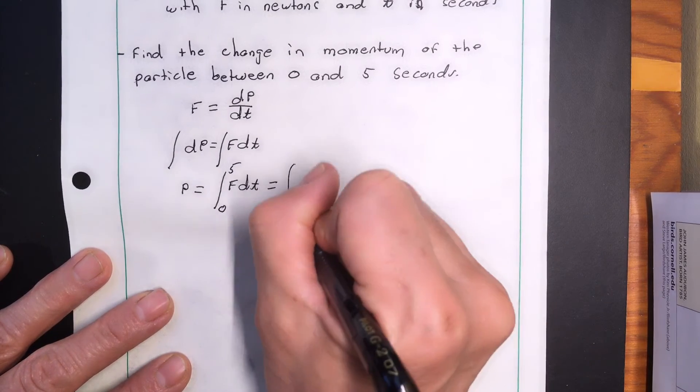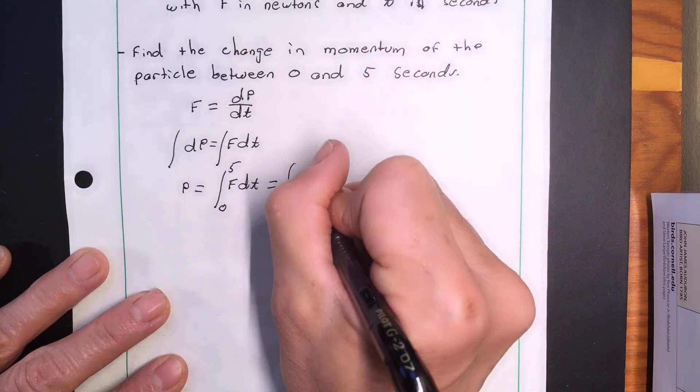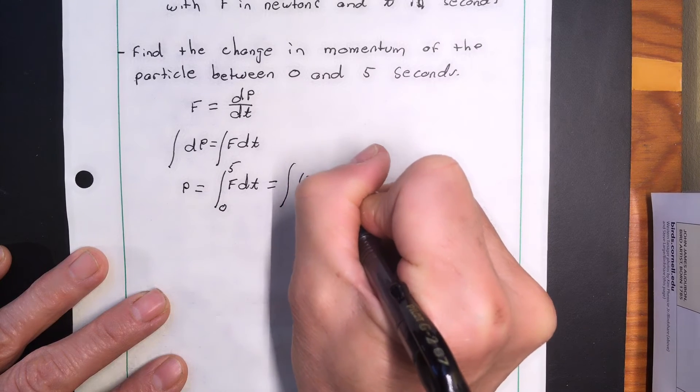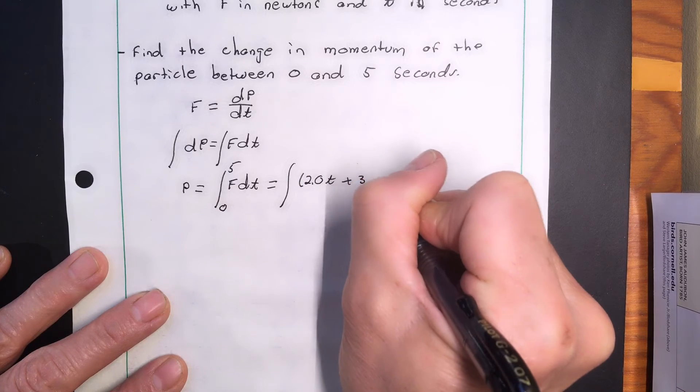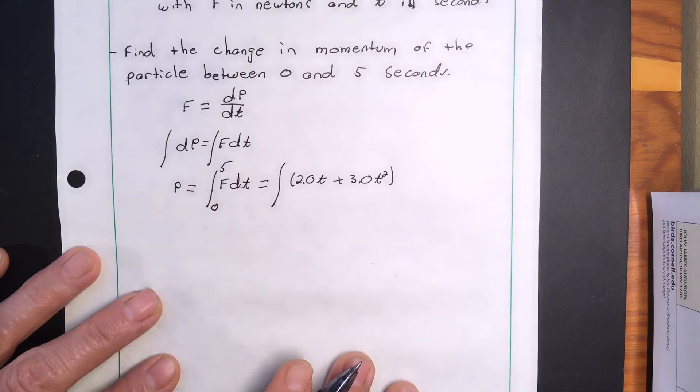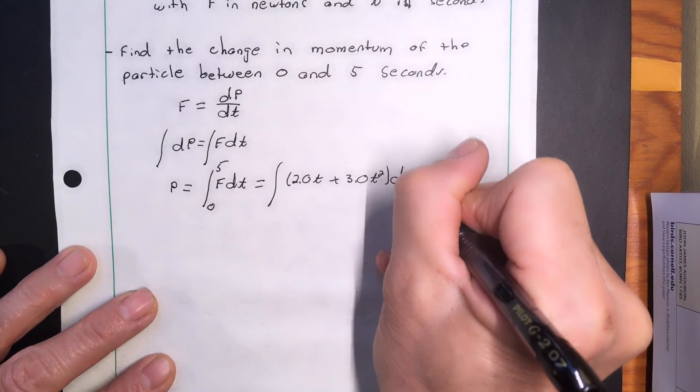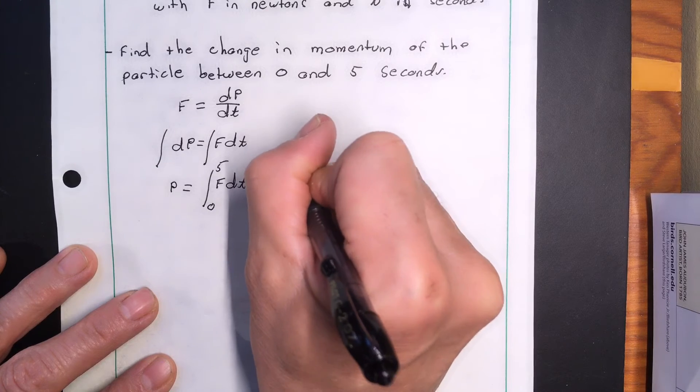So what does this look like? Well, it's 2.0 t plus 3.0 t squared dt and our limits are zero to five.